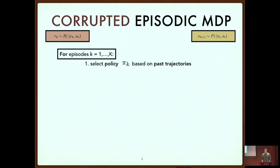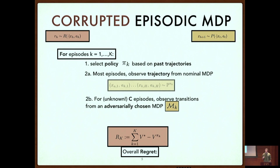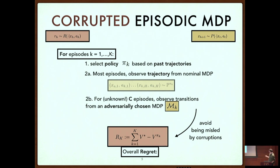How does the corrupted setting differ? On most episodes we observe a trajectory from the nominal MDP, but sometimes an adversary chooses a different MDP — different rewards and transitions — called M_K. We consider the same notion of regret: we want what the adversary selects not to corrupt our data or decisions too much. The main goal is for the estimation that goes into selecting our policy not to be misled by the corruptions. This model has been studied for a while; the closest prior formulation in the bandit setting is due to Lykouris et al. in 2018, with many follow-up works since.